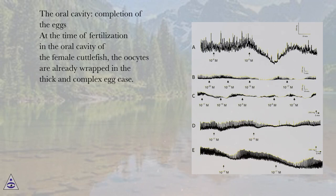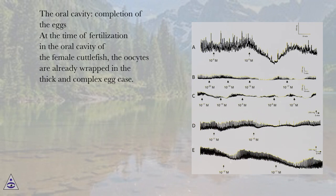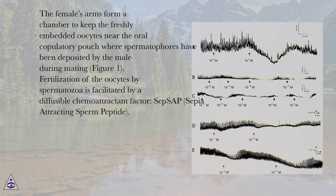The Oral Cavity. Completion of the Eggs: At the time of fertilization in the oral cavity of the female cuttlefish, the oocytes are already wrapped in the thick and complex egg case. The female's arms form a chamber to keep the freshly embedded oocytes near the oral copulatory pouch where spermatophores have been deposited by the male during mating, figure 1.